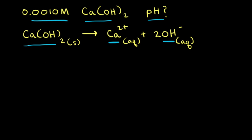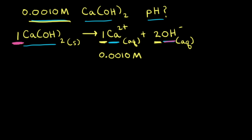Looking at the mole ratios in this dissolution equation, there's a 1 in front of calcium hydroxide, a 1 in front of calcium 2+, and a 2 in front of hydroxide ions. Since the mole ratio of calcium hydroxide to calcium is 1 to 1, if the initial concentration of calcium hydroxide is 0.0010 molar, that's also the concentration of calcium ions — 0.0010 molar. The mole ratio of calcium hydroxide to hydroxide ions is 1 to 2, so the concentration of hydroxide ions is twice that concentration.